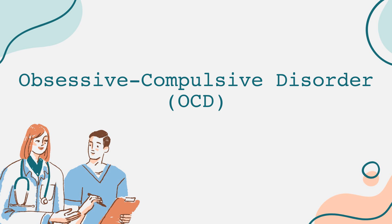The exact cause of OCD remains unclear, but it is believed to be a combination of genetic, biological, and environmental factors. Research suggests that certain brain structures may be involved in OCD, and people with a family history of the disorder may be at higher risk. OCD can affect anyone, regardless of age or gender, although symptoms typically start during childhood or early adulthood.